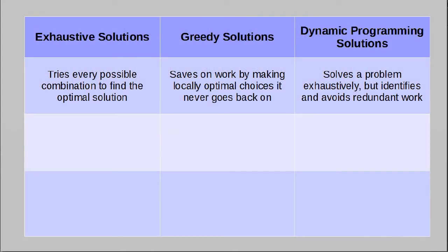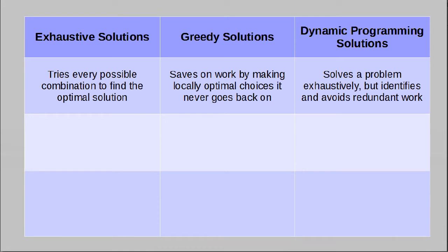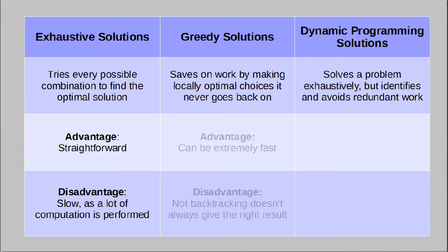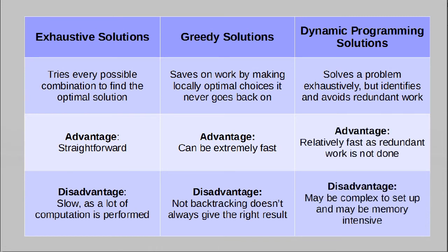Now would probably be a good time to compare dynamic programming to greedy algorithms, and also compare this with doing the problem exhaustively. Doing the problem exhaustively takes the greatest amount of time but is the most straightforward to implement. A greedy technique is very fast, but only because it assumes it never needs to backtrack. If this fails, we have a better alternative to exhaustive search by keeping an eye out for certain patterns. If we can spot these patterns, we can make use of dynamic programming, which allows us to save on doing some redundant work. That is dynamic programming in a nutshell.